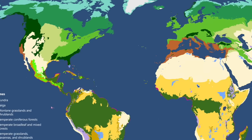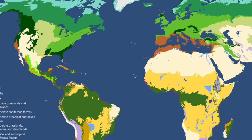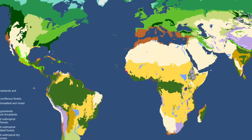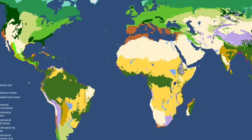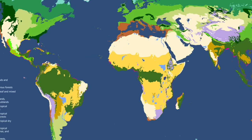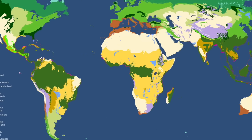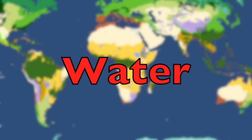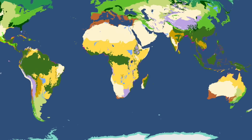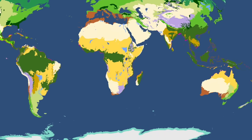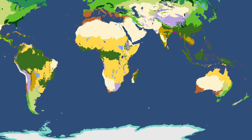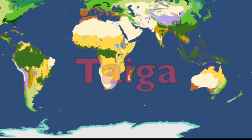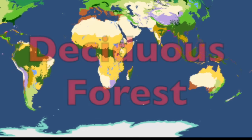Grasslands are divided into savannah and temperate grasslands. Aquatic biomes are split into freshwater and marine, or ocean salt water. However, if you want the seven generally accepted biomes, they would be water (fresh or ocean), rainforest, tundra, desert, taiga (a coniferous forest), deciduous forests, and grasslands.